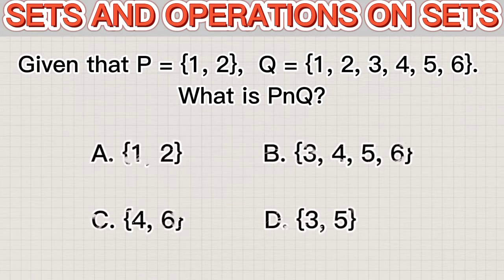Let's solve it. So we have the options given to us: A: 1, 2; B: 3, 4, 5, 6; C: 4, 6; and then D: 3, 5.